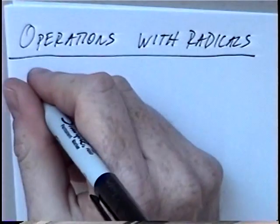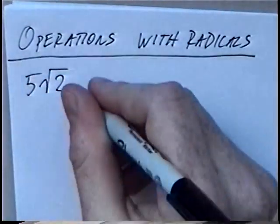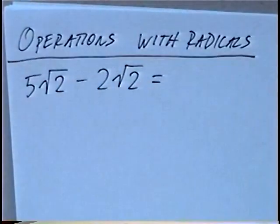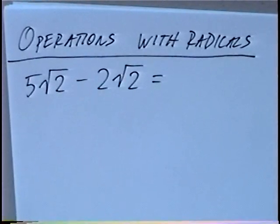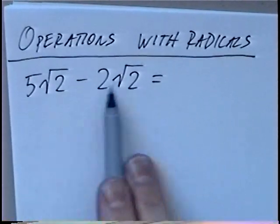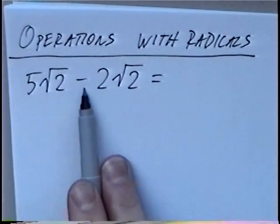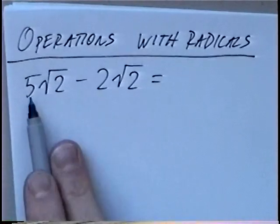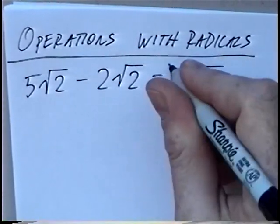The first question is 5 radical 2 minus 2 radical 2. When subtracting radicals, similar to variables, you have to have like terms — the same radical, the same root number, in this case square roots. So 5 radical 2 minus 2 radical 2: subtracting the coefficients gives us 3 radical 2.